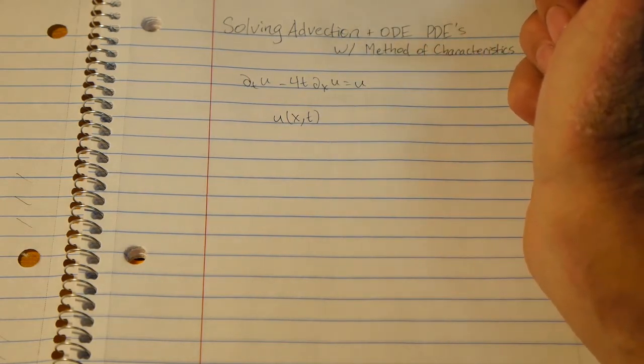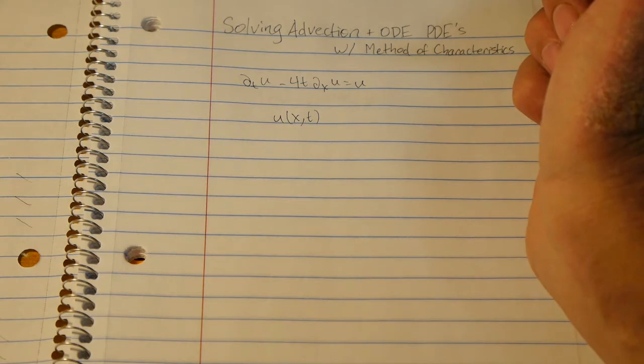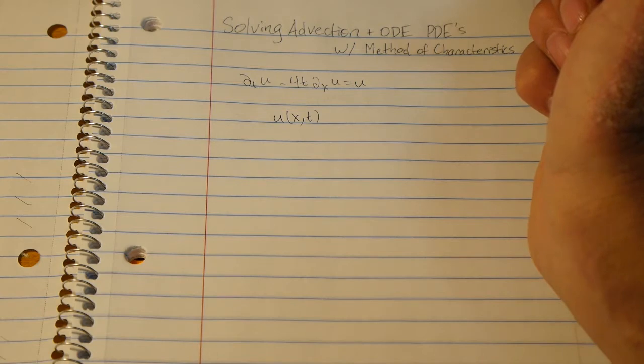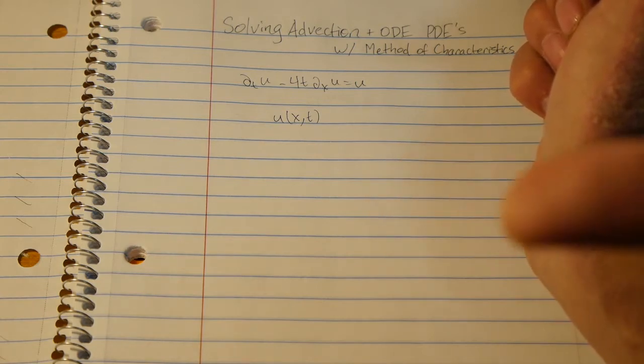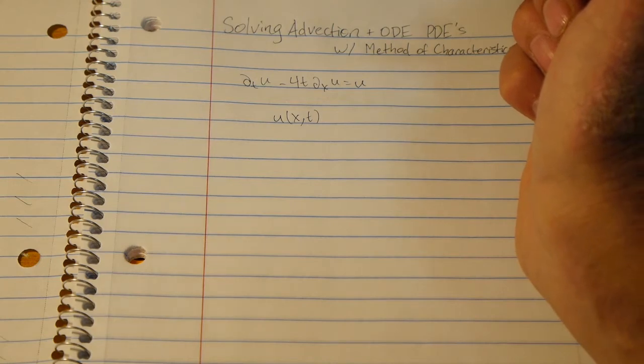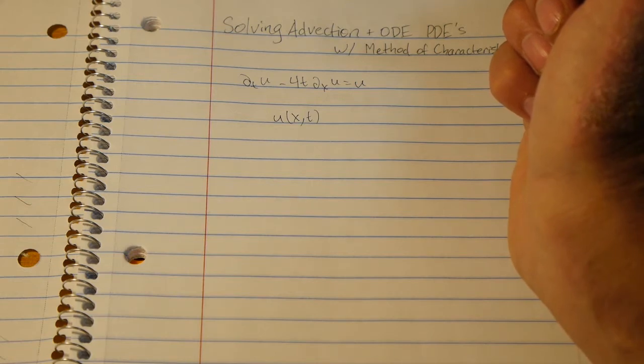What we want to start with is we want to make t the key variable and rewrite x in terms of t as well as u. Then we only have one variable and this becomes an ordinary differential equation that we can solve a lot more easily than the partial differential equation itself.